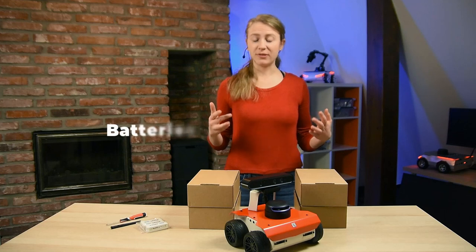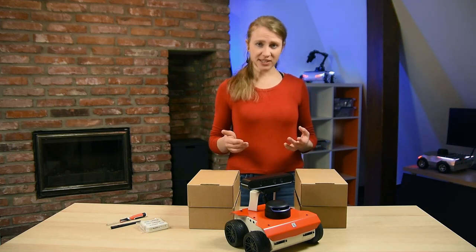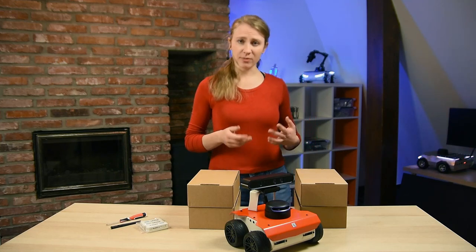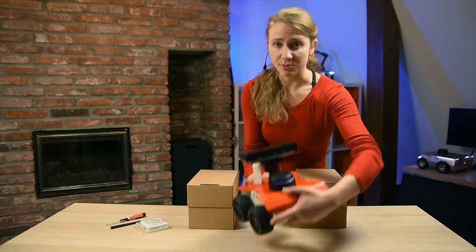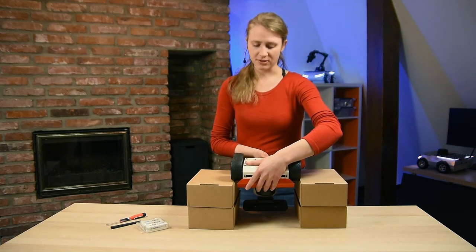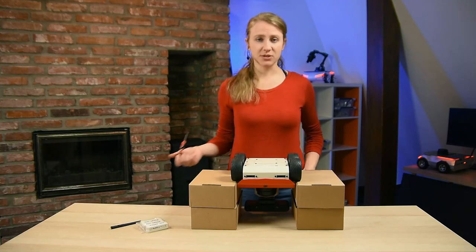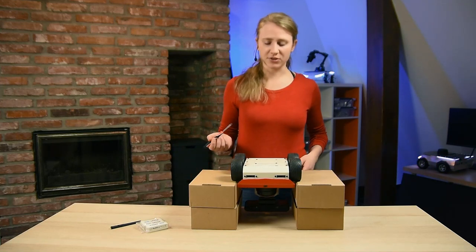We have our robot unpacked but before we start using it we need to put the batteries inside and mount the Wi-Fi antenna. To mount the batteries you need to turn the Rosbot upside down, you can just hold it or you can put it on some boxes as I do here. Then you need to unscrew and remove the battery cover.